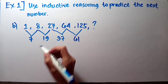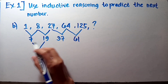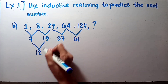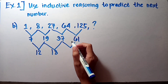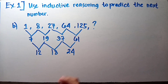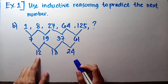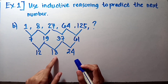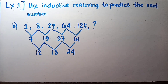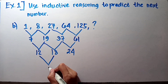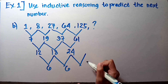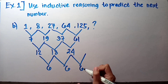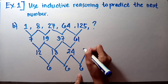Let's find the differences of those differences again: 19 minus 7 is 12, 37 minus 19 is 18, 61 minus 37 is 24. Now notice: 12, 18, and 24 — adding 6 each time gives the next. So 12 plus 6 is 18, and 18 plus 6 is 24, meaning their common difference is 6. So the next value after 24 would be 24 plus 6 equals 30.